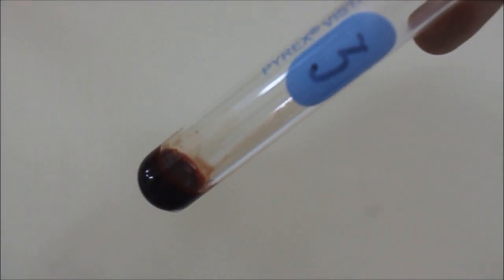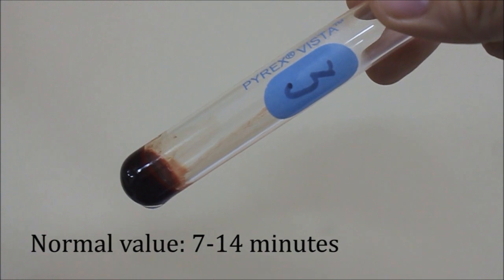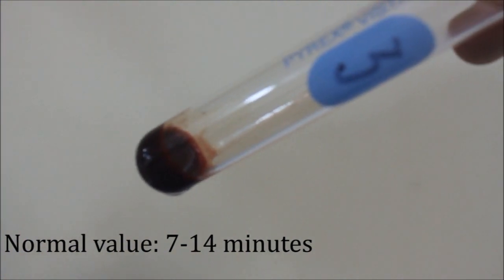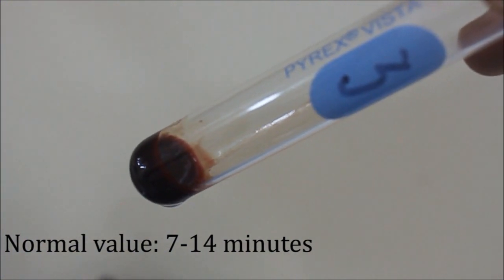The coagulation time of test tube number 3 is the reported result. The normal value for the Lee and White method is 7 to 14 minutes.